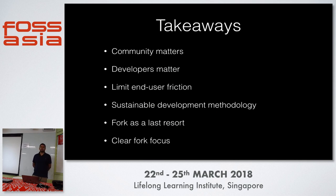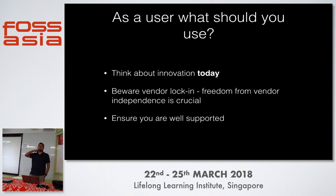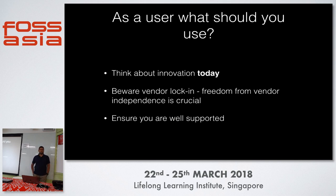You only fork after all other options are exhausted. Don't fork because you think you're going to print money — forking for the sake of forking is very silly. Have a clear fork focus. As a user choosing a branch, think about the innovation happening today, vendor lock-in — because even in open source you can be vendor locked in without realizing it — the features you need today and tomorrow, and the support ecosystem around it. Look at website changes and web.archive.org to see if they're actually developing software or just spending on websites.